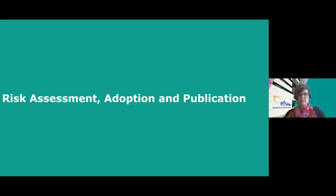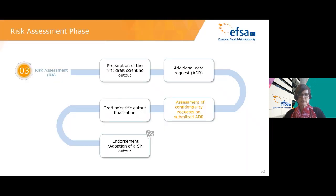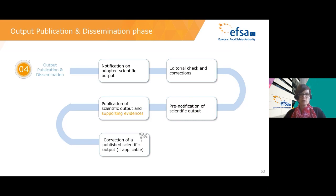Moving to the final phases of the application lifecycle: in the risk assessment phase, the only new element is the assessment of confidentiality requests on newly submitted additional data following an additional information request (clock stop). All other steps remain the same. In the output publication and dissemination phase, there is notification of the adopted output, editorial checks, and pre-notification of the scientific output — nothing changes compared to pre-transparency regulation.